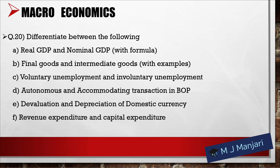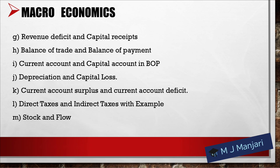Question 19: Explain three components of capital account and current account in balance of payment. Question 20: Differentiate between the following — A. Real GDP and nominal GDP with formula. B. Final good and intermediate good with example. C. Voluntary unemployment and involuntary unemployment. D. Autonomous and accommodating transaction in BOP. E. Devaluation and depreciation of domestic currency. F. Revenue expenditure and capital expenditure. G. Revenue deficit and capital receipt.